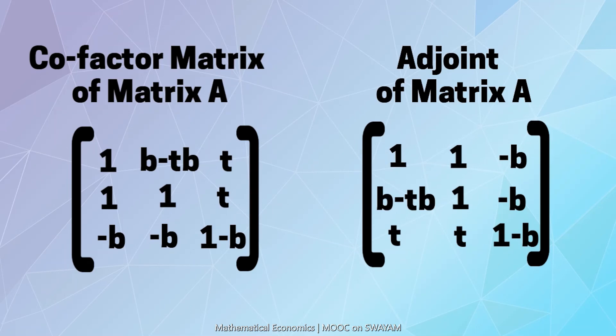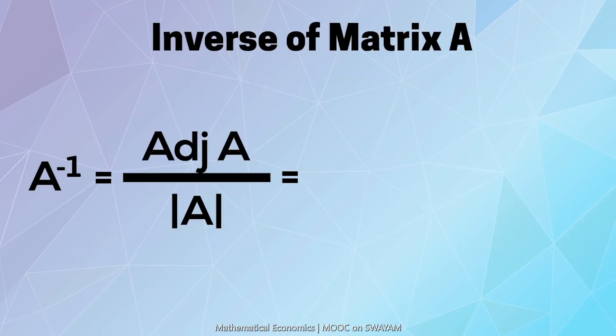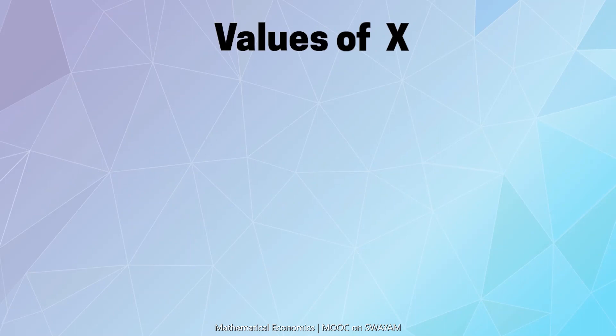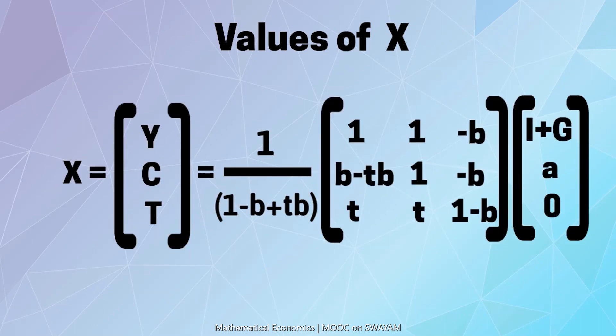Finally, the inverse of matrix A is given by dividing the adjoint of the matrix by the determinant of the matrix. Further, the values of matrix X may be calculated by multiplying the inverse of matrix A with the vector of constants.